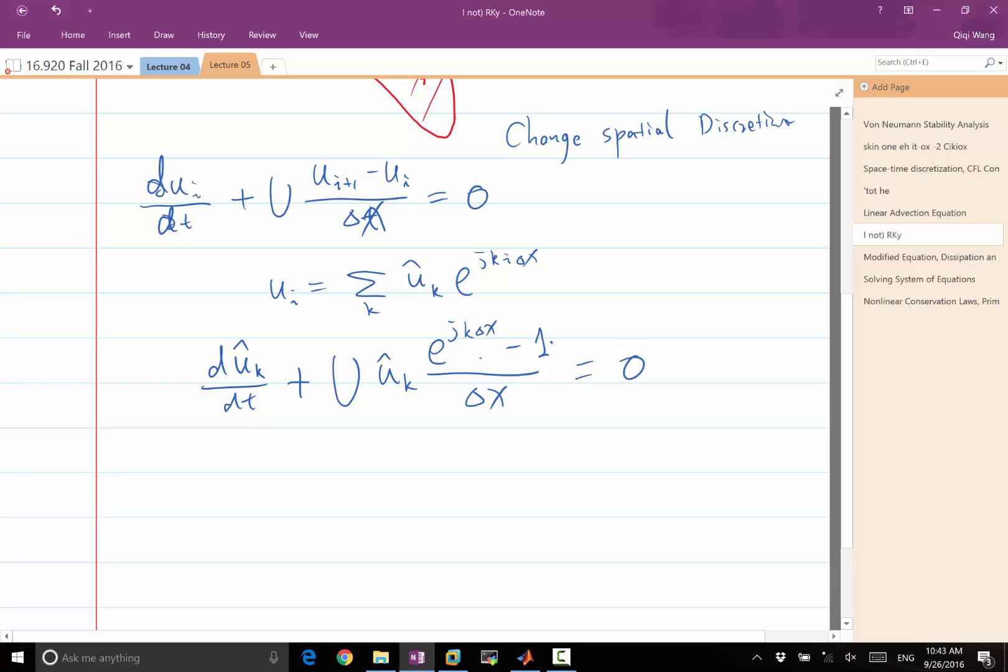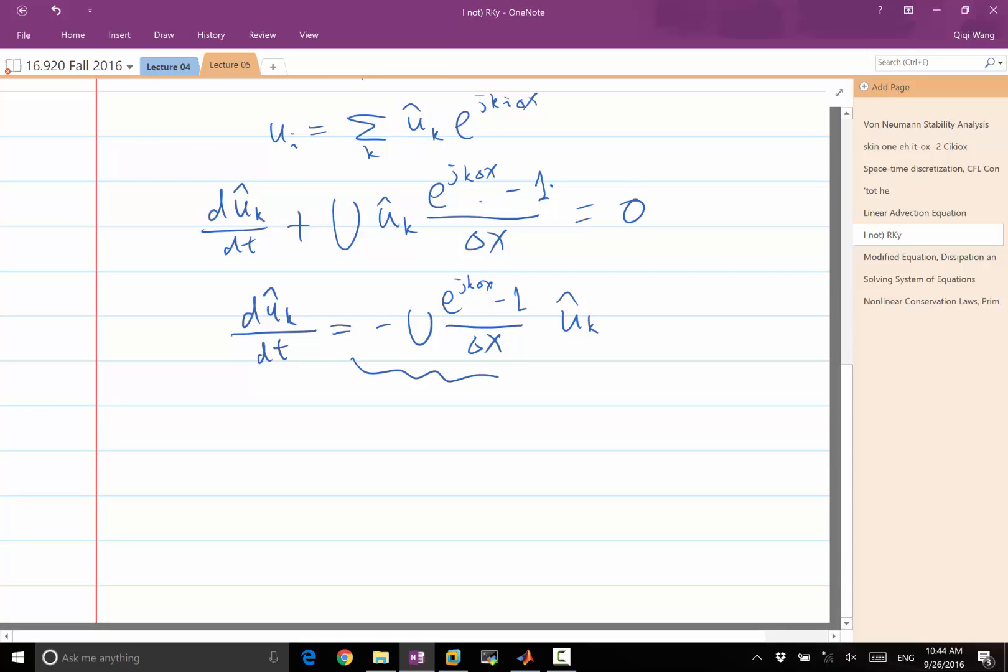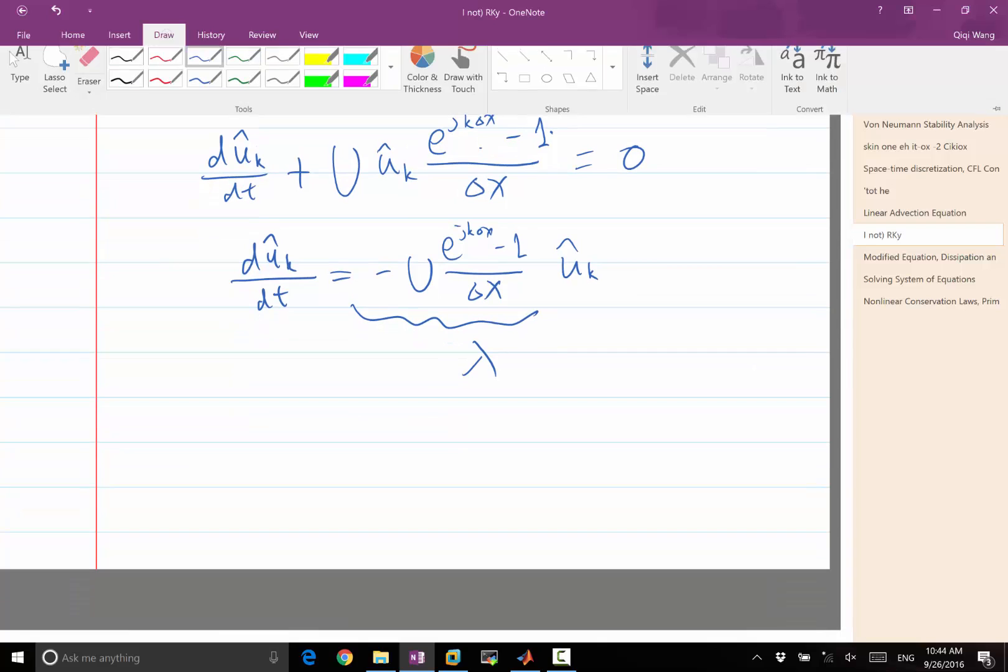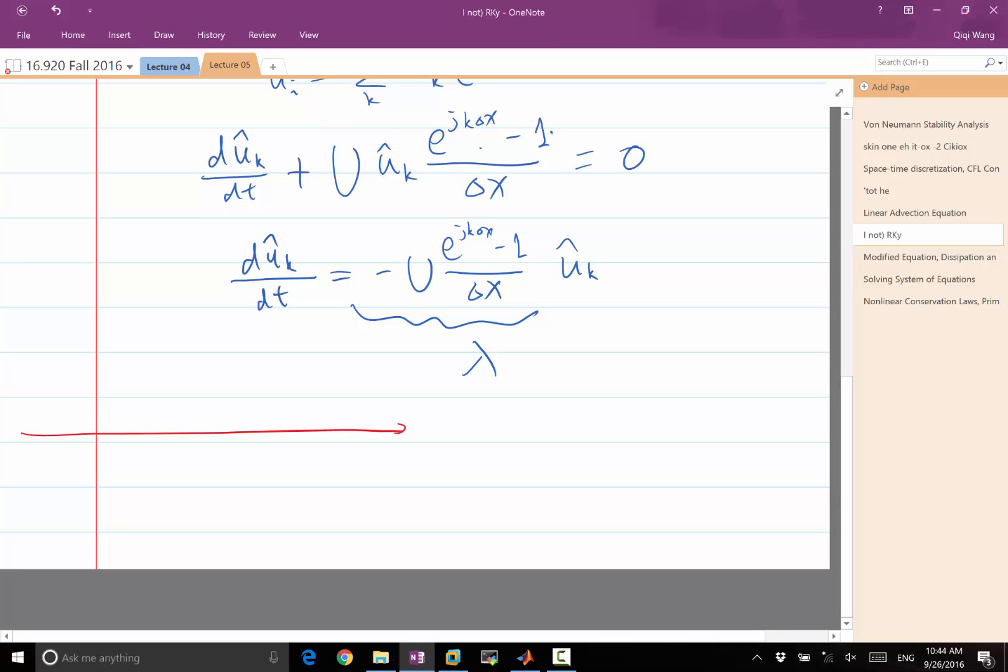So we are left with this. And what we have is du hat of k dt equal to minus u times this guy over here times u hat of k. Now this is our lambda. Any idea where it is on the complex plane? So let's draw the complex plane. And hopefully it is on this side. So real of lambda, imaginary of lambda.